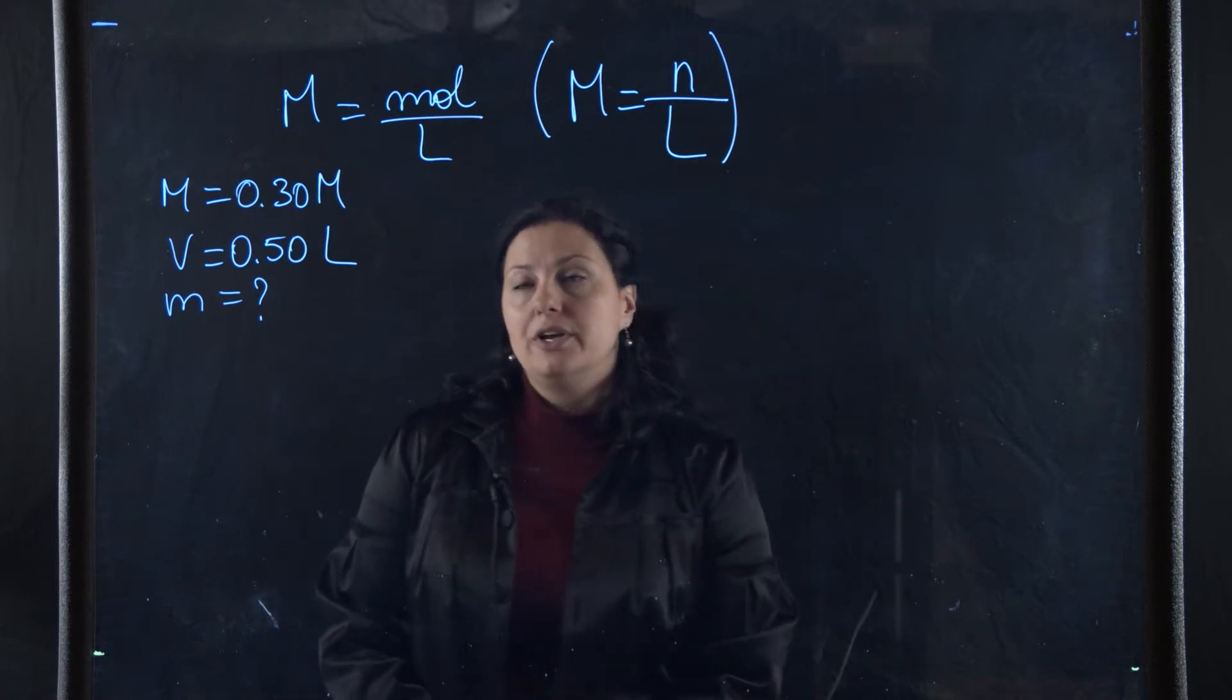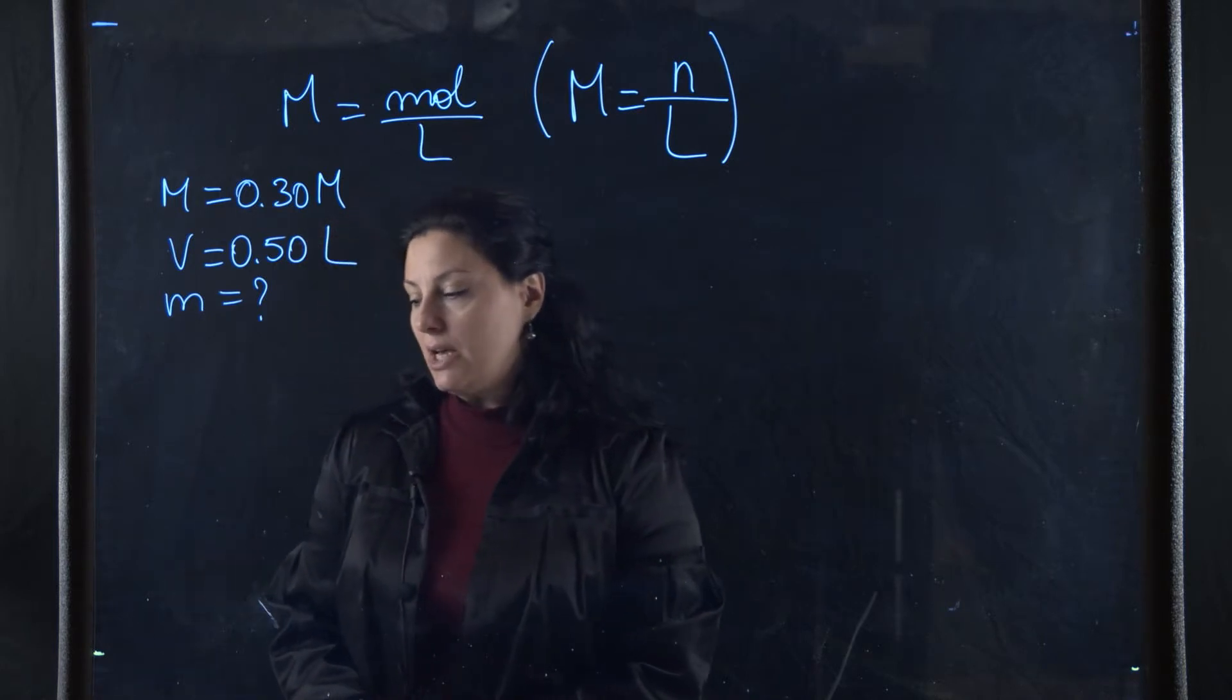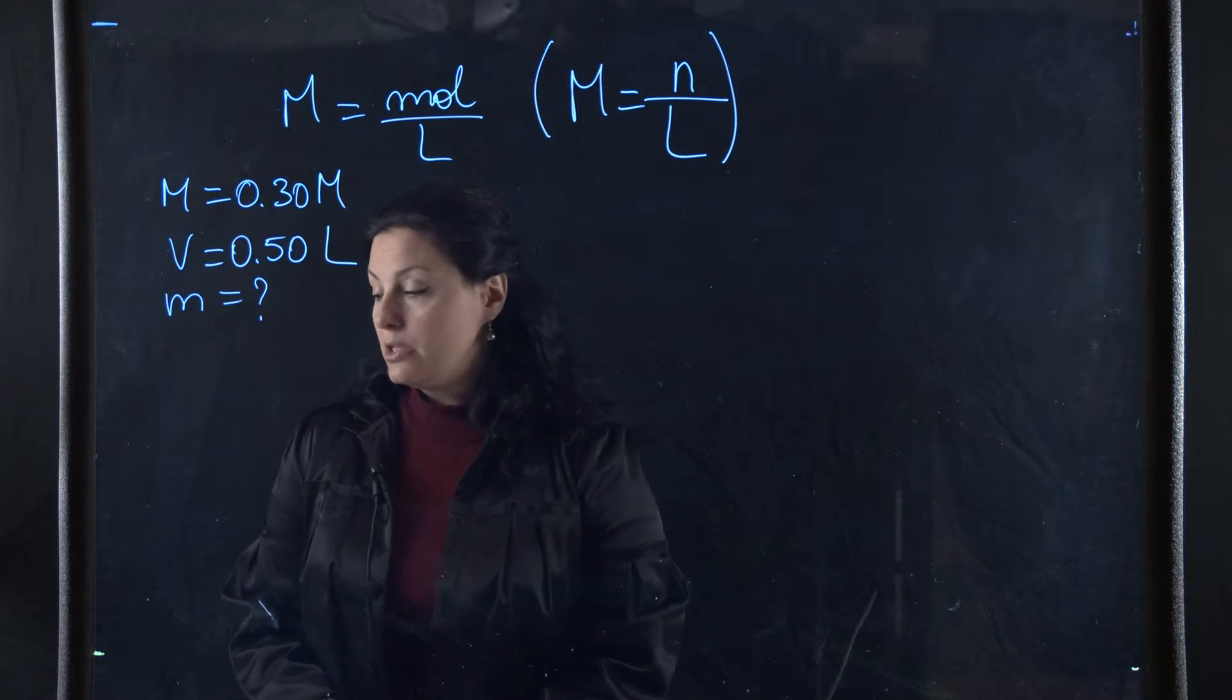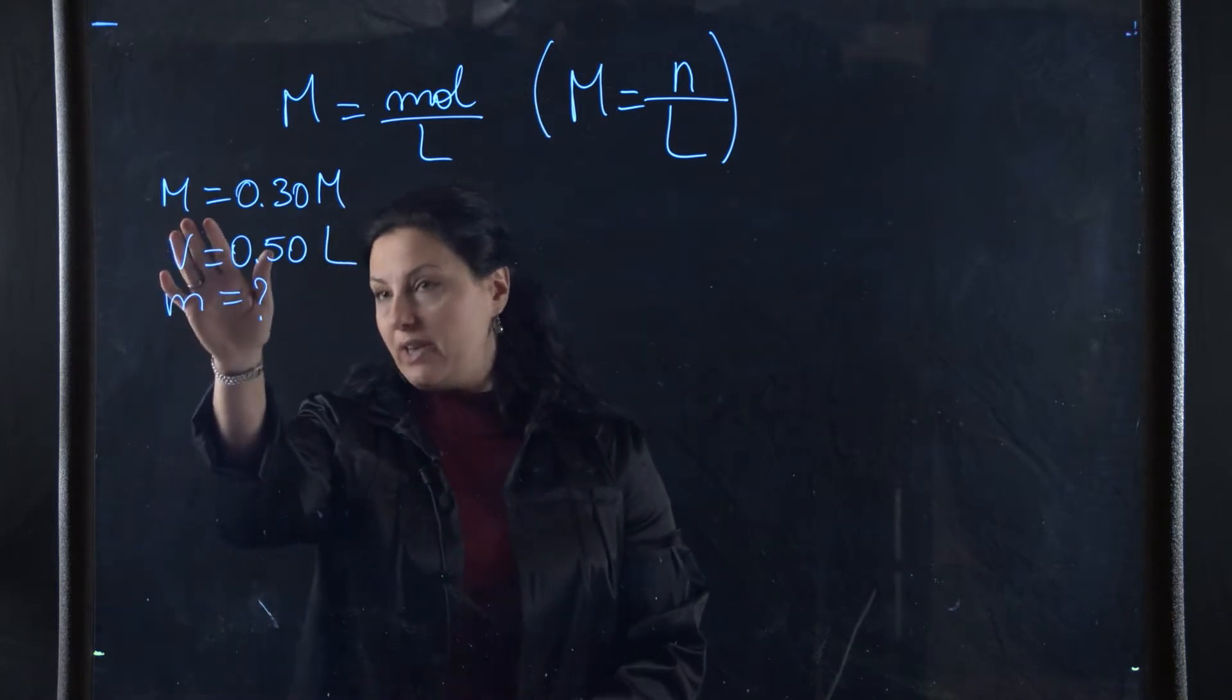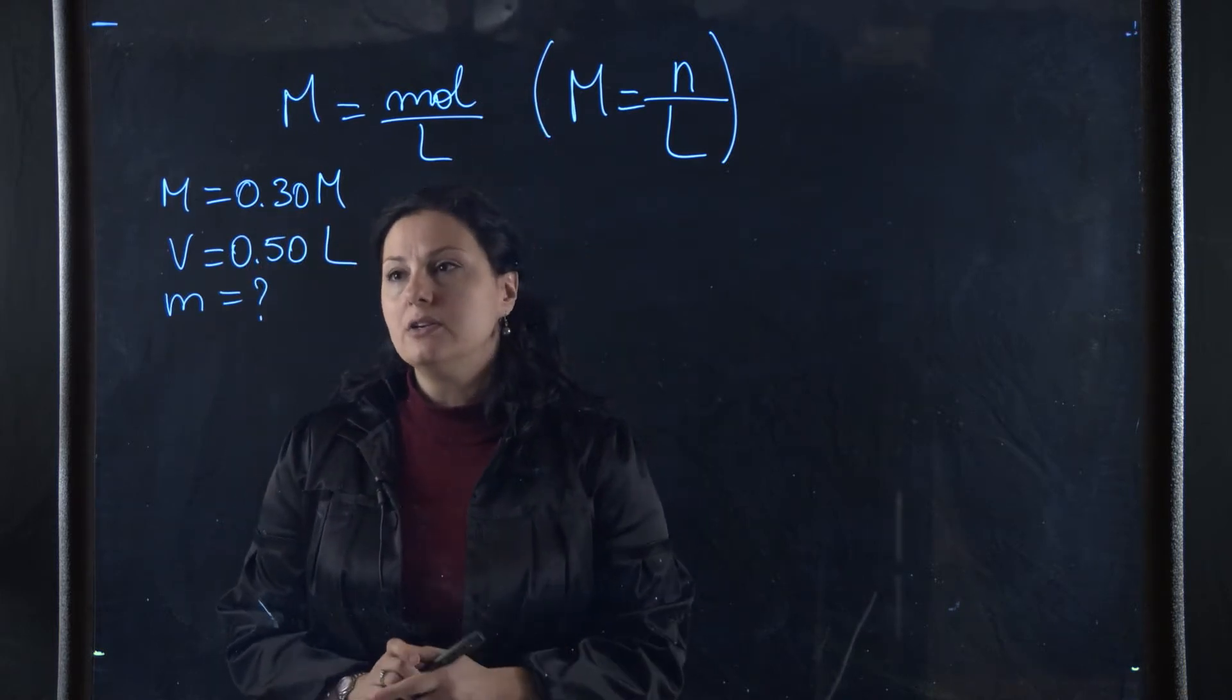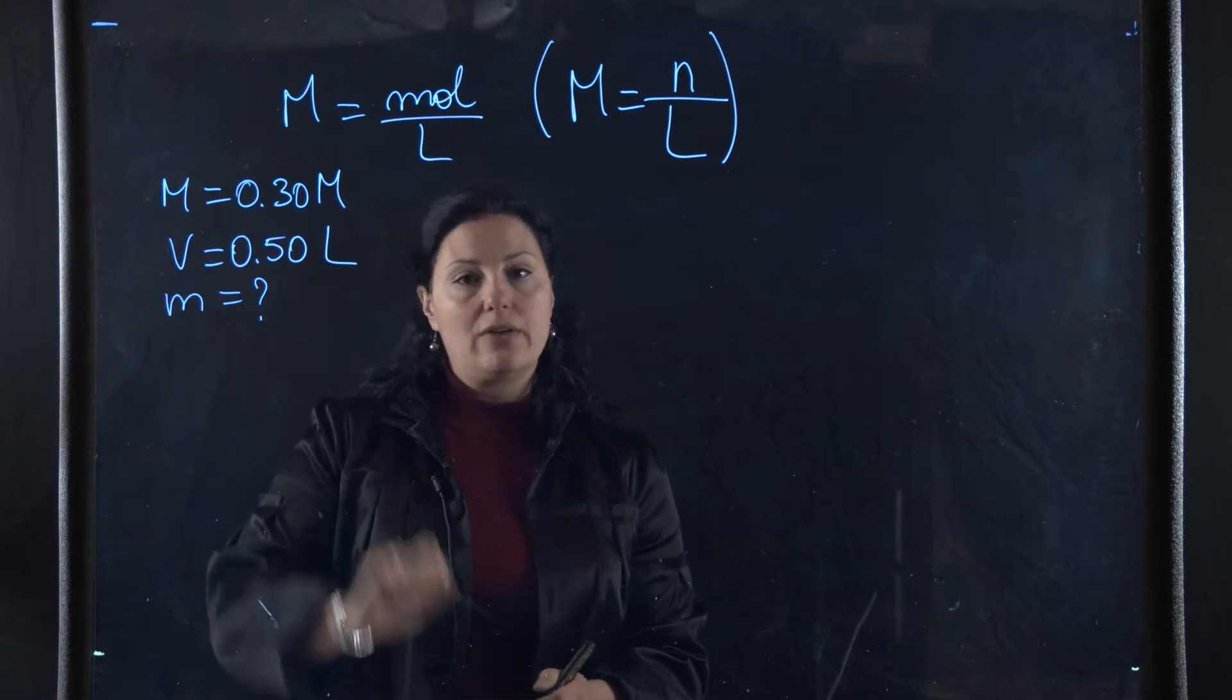Let's take a look at these molarity problems. What is the mass of the solute in 0.5 liters of 0.3 molar glucose solution used for intravenous injections? We're given the molarity of the solution, 0.3 molar or 0.3 moles over one liter. We're given the volume of 0.5 liters and we're asked to figure out the mass.